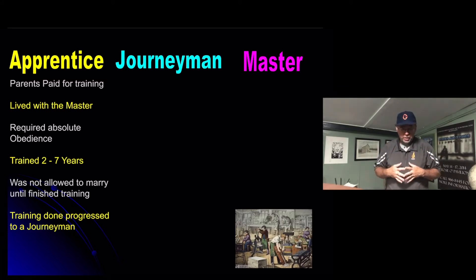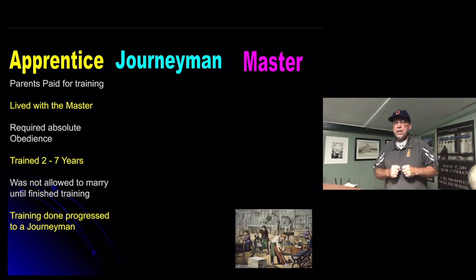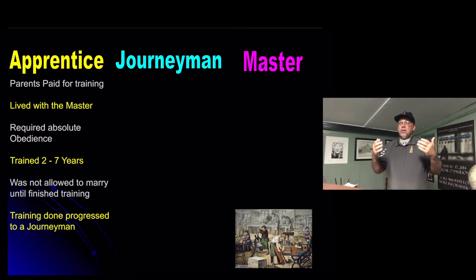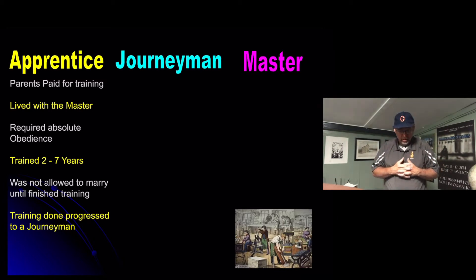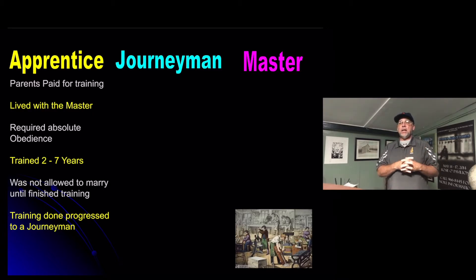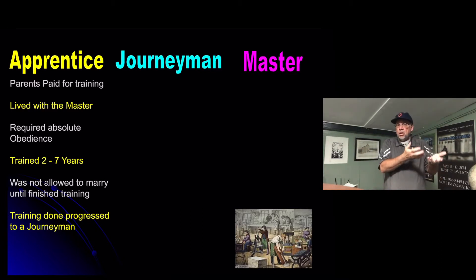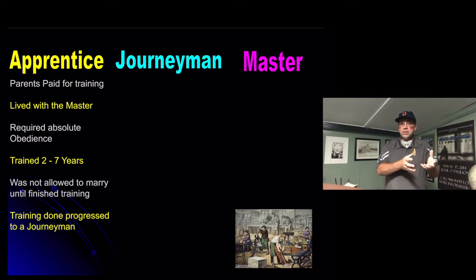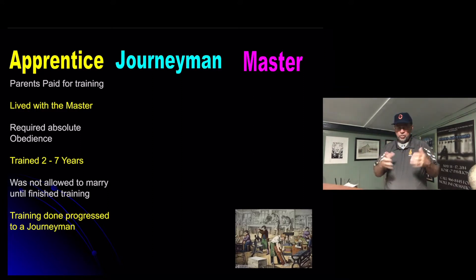It required absolute obedience to the master — something we've really gone away from because we've learned to be super independent and people can't tell us what to do anymore. You trained for two to seven years depending on what the skill was. The more advanced the skill, the longer the training. Depending on how artsy a skill was combined with how complex it was determined the length of your training.